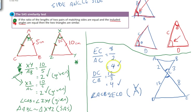So finally we have our solution here. If this ratio, 4, is equal to this ratio, 4, and the included angle, the angle between them is equal, then we can say that triangle ACB is similar to triangle ECB because of side angle side.